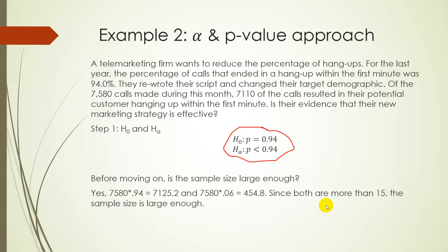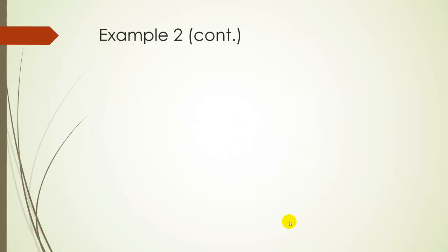So before moving on, let's check if our sample size is large enough. Well, the sample size is pretty huge, as you can see. It's pretty clearly going to be large enough, but just to check. Well, there were 7,580 people in our sample. 94% of those people would be a little over 7,000, a lot over 7,000. That's clearly at least 15. And 6% of 7,580 is, again, clearly over our number 15 that we need. Since both are more than 15, the sample size is clearly large enough.